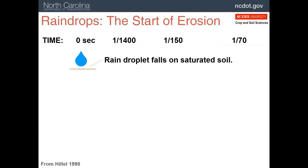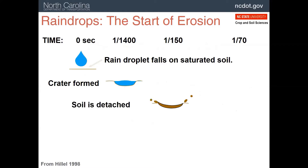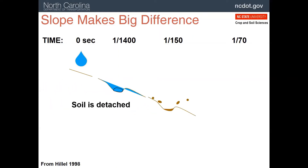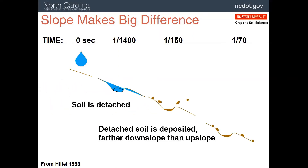This is an illustration of how a raindrop can erode soil simply from its impact. It forms a crater, then throws the particles out, and these can then be picked up by flowing water. On a slope, the soil being thrown out of the crater actually goes farther down the slope, so you get erosion just from the raindrops pushing soil downslope.